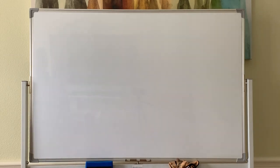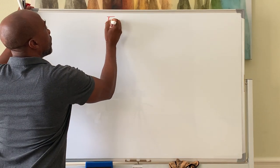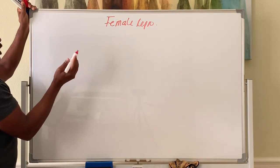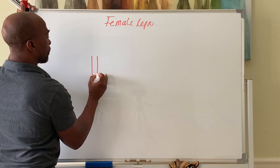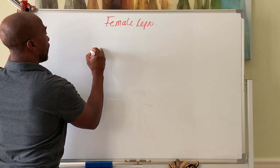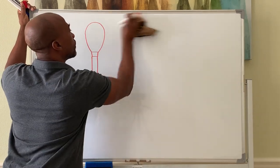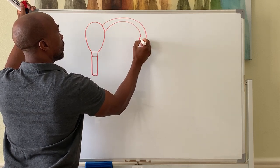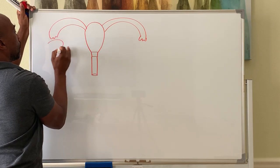Alright, we'll look now at the female reproductive system. In the female reproductive system, we have of course the vagina here. On top of it is your cervix. We have your uterus with the uterine tubes, and you have your ovaries.